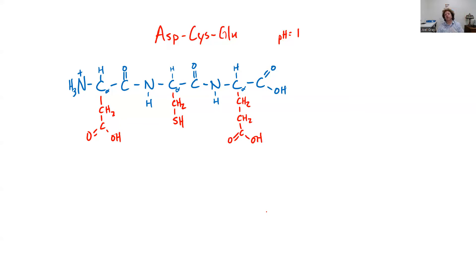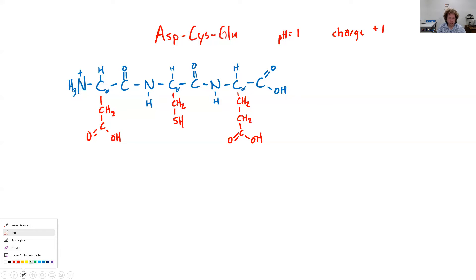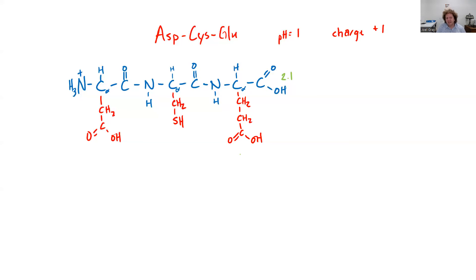So here is my tripeptide drawn at a pH of 1. What's worth noting about this tripeptide is that it has an overall charge of plus 1. Now, what I want to do next is show how these amino acids are going to change based on the pH of the solution. I need to think about each one of the ionizable groups and think about what the pKa of that group is. My C-terminal carboxylic acid is going to have a pKa of about 2.1. My glutamic acid R group is going to have a pKa of about 4.2.